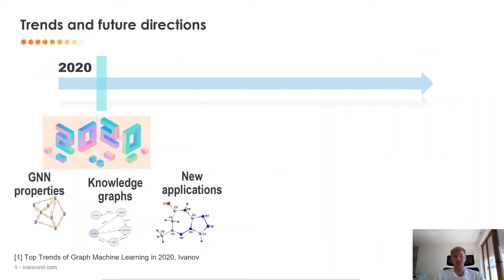Now, let's talk a little bit about trends and future directions of this field. In the beginning of this year, I wrote a blog post on top trends of graph machine learning for this year, and I outlined three different big topics that people currently work on. The first one is studying foundations of graph neural networks. For example, answering the question of how powerful graph neural networks are, what are the limitations of graph neural networks, and studying different phenomena such as over-smoothing.